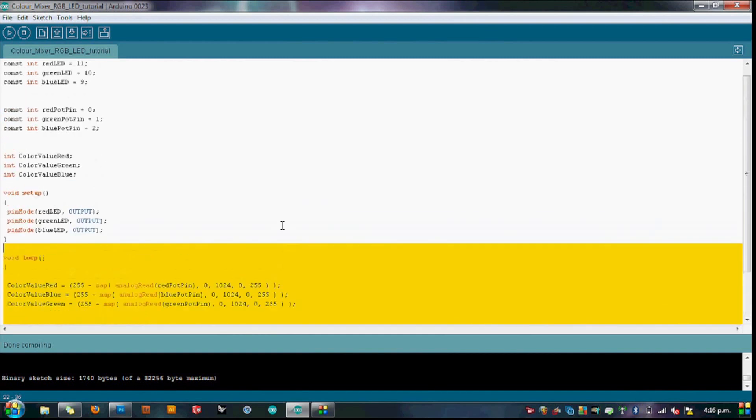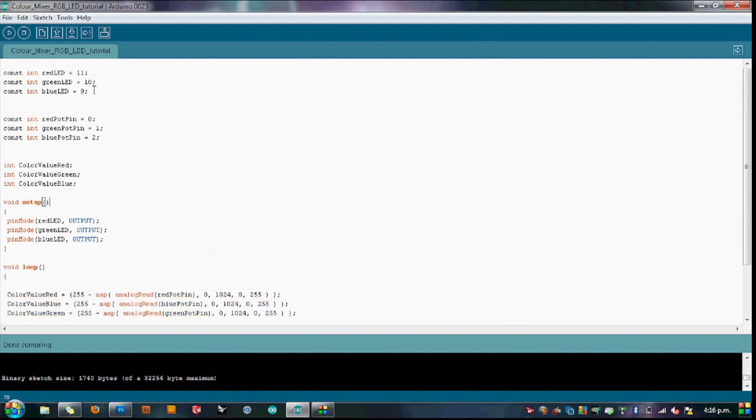We'll start off by stating our variables for the pins on the RGB LED. Here we have used PWM pins 9, 10 and 11 for green, blue and red respectively.